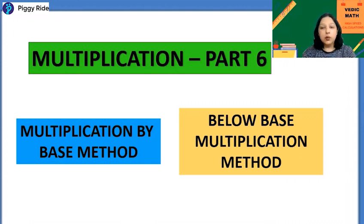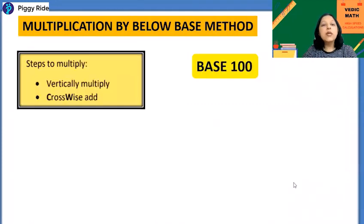So let's learn below Base multiplication. First of all, what are below Base numbers? Below Base numbers are like 98, 99, or you can say just less than 1000 like 998, 992, or 995 and so on. All these numbers are below Base.